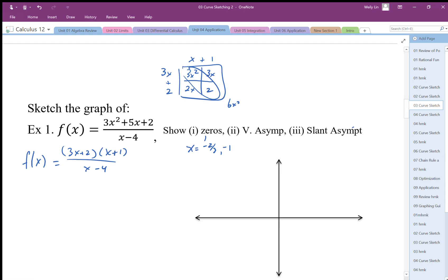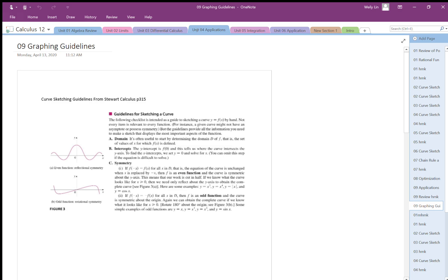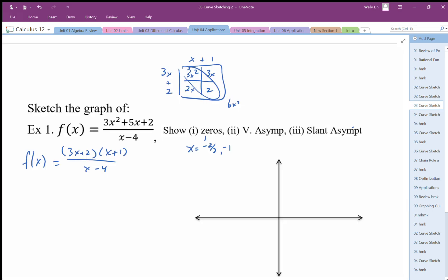My vertical asymptote is going to be at x equals positive 4. Maybe I'll draw a vertical asymptote like that. That's positive 4.